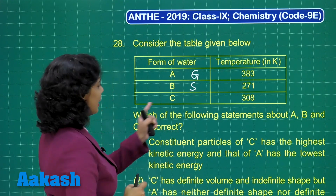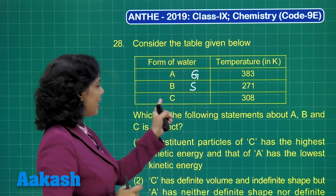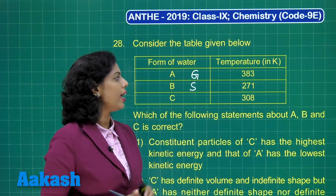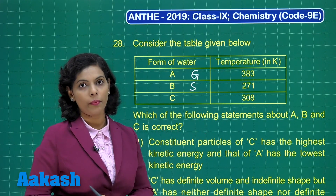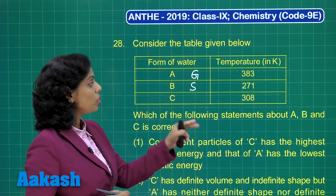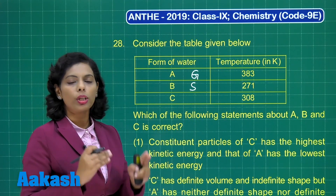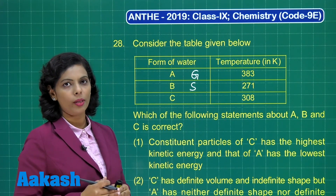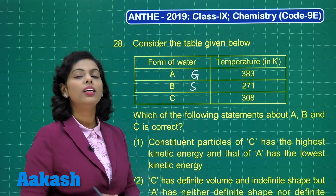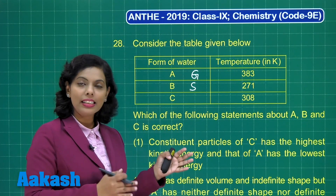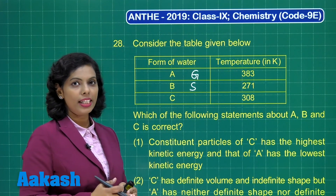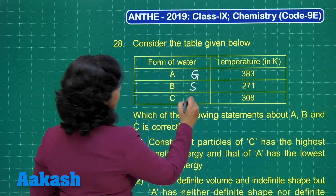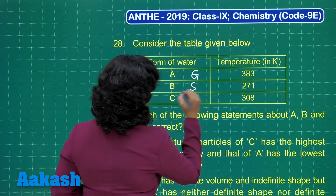Similarly, if I talk about C, that has a temperature of 308 Kelvin, and that is the temperature at which water exists as liquid. Because at this temperature, there is neither the solid state nor the gaseous state of water. So here it is in liquid state.